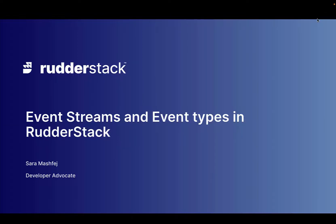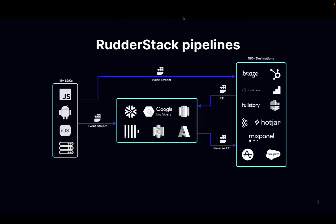Hello everyone and welcome to the second part of the WriterStack 101 series. My name is Sarah and today we're going to be talking about event streams and some of the different event types that we can start sending in WriterStack. WriterStack supports three different types of pipelines: event stream, ETL, and reverse ETL.